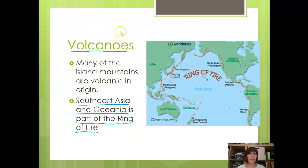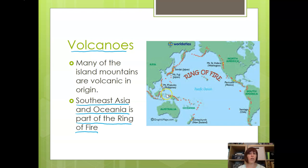Volcanoes are an important part of this region as well. We talked about the Ring of Fire, and Southeast Asia and Oceania are both part of the Ring of Fire. Indonesia, for example, is mostly made up of volcanoes — that's how the islands were formed. Plate tectonic activity, earthquakes, and tsunamis are also having a big impact on the region.